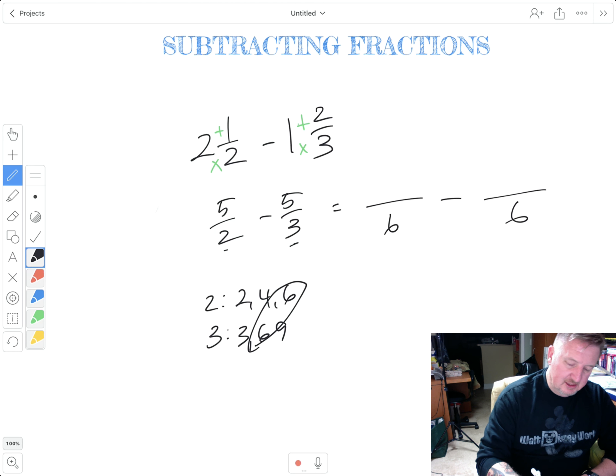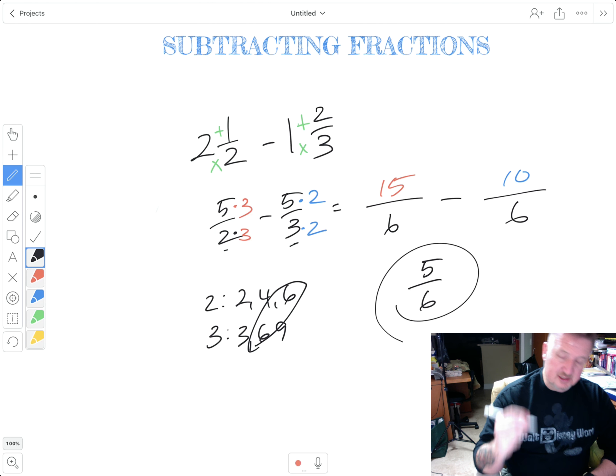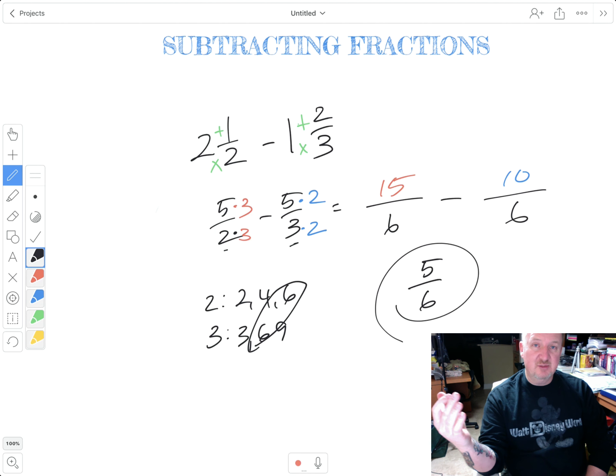What did I multiply two by to get six? Well, I multiplied times three. So five times three is 15. Then what did I multiply three by to get six? I multiplied by two. So five times two is 10. Now I can go ahead and subtract 15 minus 10 is five. The denominator stays the same. I can't simplify it. So that's my final answer.